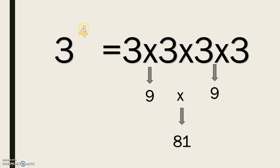this teeny little number means a lot. Three to the fourth power is three times three times three times three. Nine times nine, eighty-one.